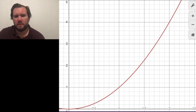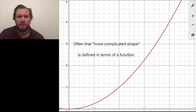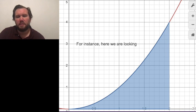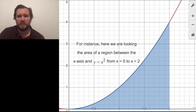So often, that more complicated shape is defined in terms of a function. For instance, this blue area that we see is defined as the area of the region between the x-axis and the graph of y equals x squared from x equals 0 to x equals 2.